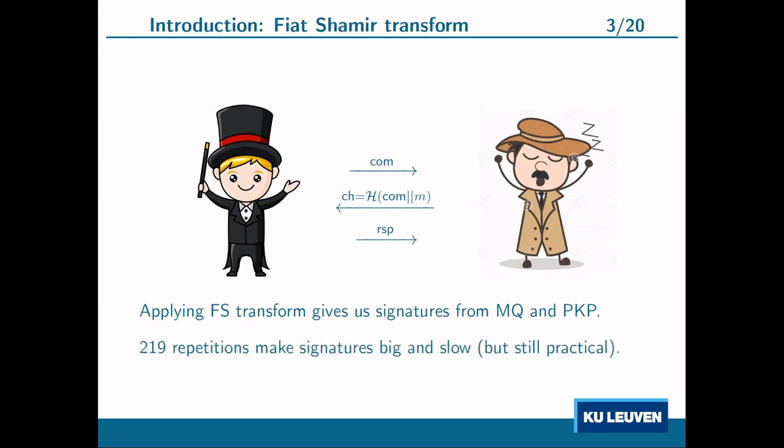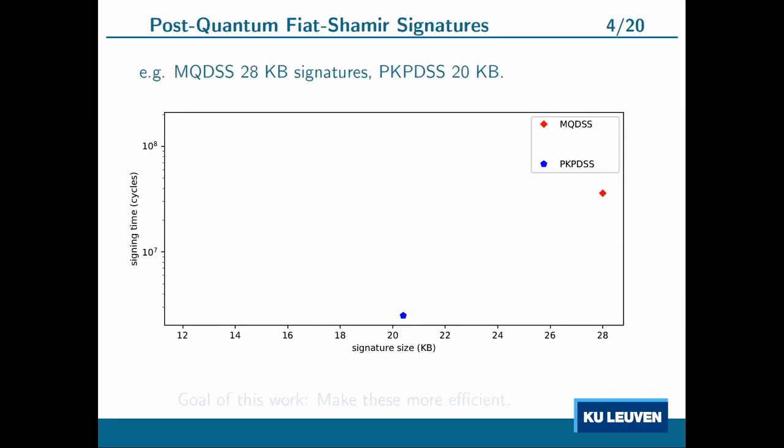For example, if you need to repeat the sigma protocol 290 times, the signature size will be 290 times bigger and verification will be 290 times slower. The graph shows two signature schemes derived via the Fiat-Shamir transform: in red, MQ-DSS (based on MQ, a NIST round-two candidate), and in blue, PKP-DSS (based on the permuted kernel problem, a finalist from a Chinese post-quantum competition). At NIST level 1 security, MQ-DSS has a signature size of 28 kilobytes and PKP-DSS has 20 kilobytes.